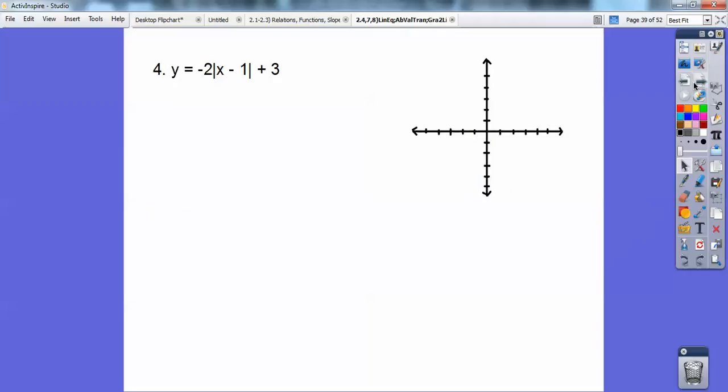How about this guy? The vertex on this one is positive 1, positive 3. So it's over here somewhere. Over 1, up 3, right there. It's going down because it's negative. It's going down, over 1, down 2. So there it is right there. Over 1, down 2. Went through right there, and right there.